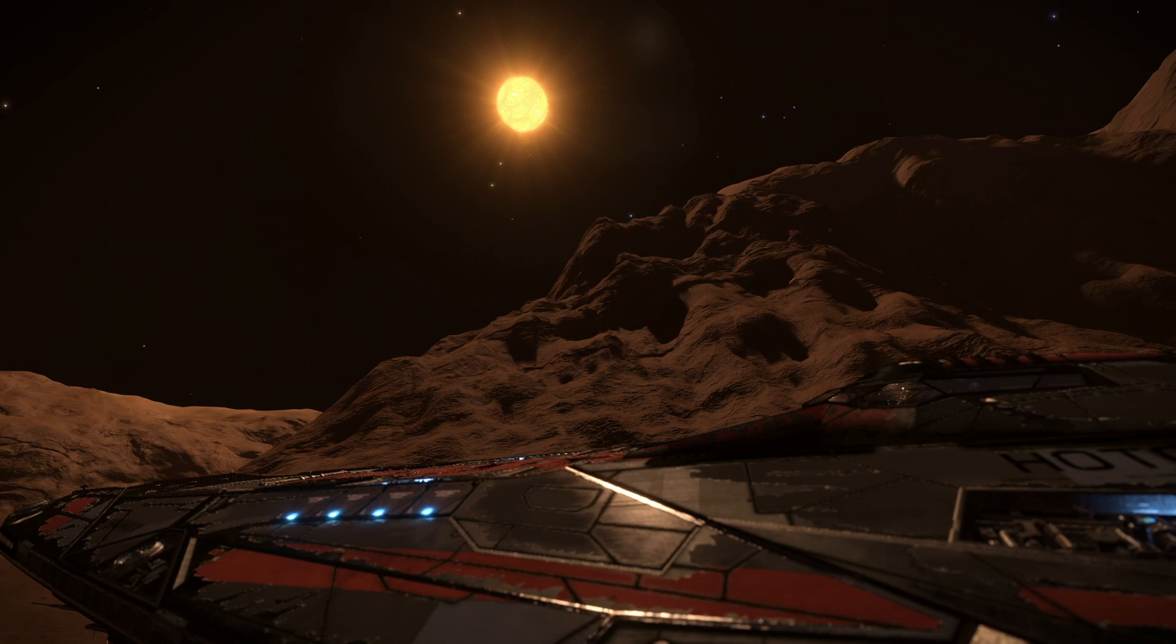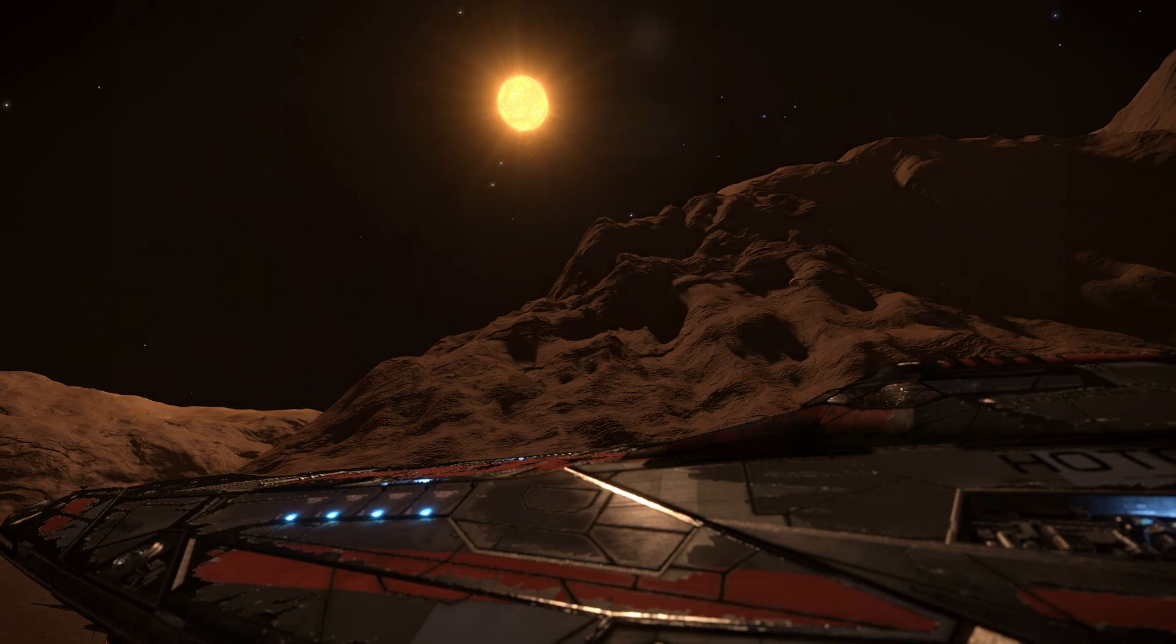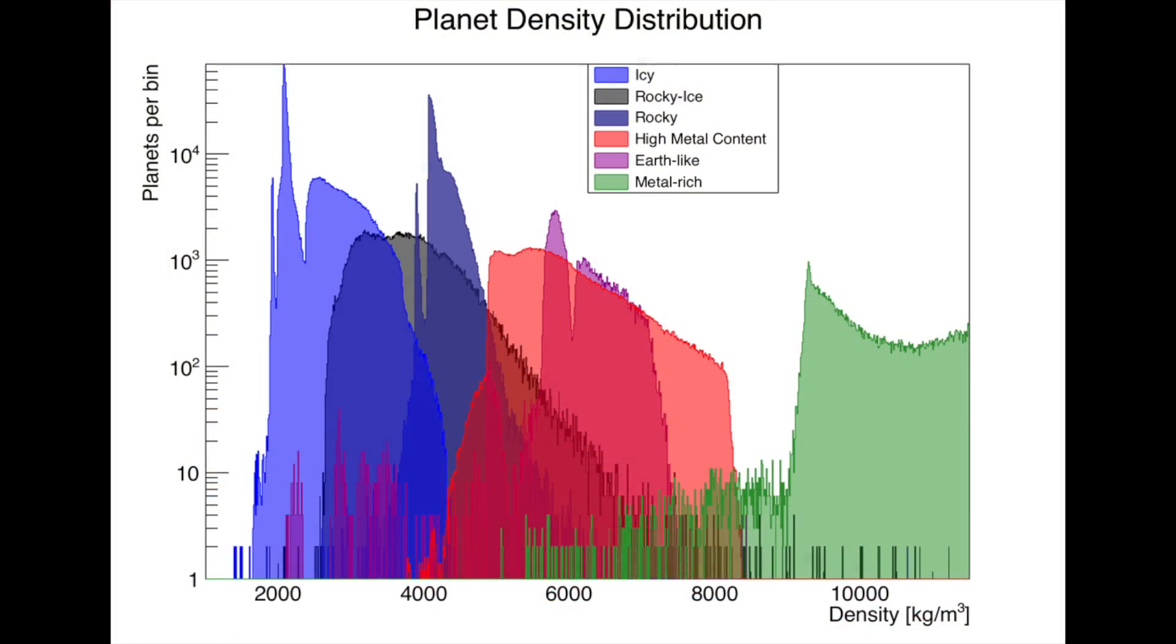Easy, right? This brings me on to the next topic in relation: density. Each planet type has a different mean density, and it is this for a given radius that defines just how massive and how high the surface gravity is.